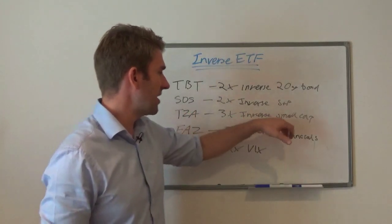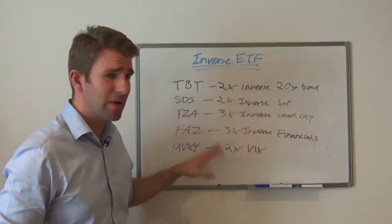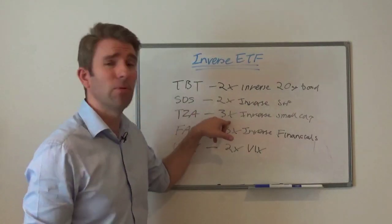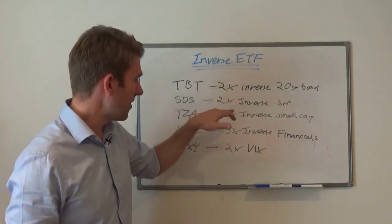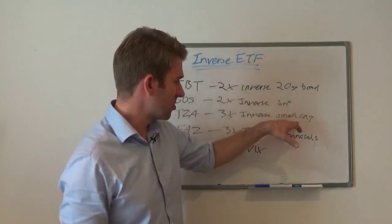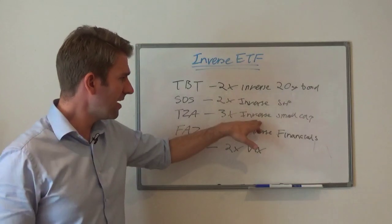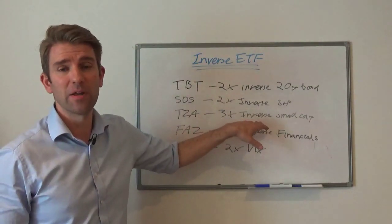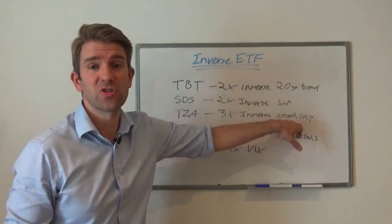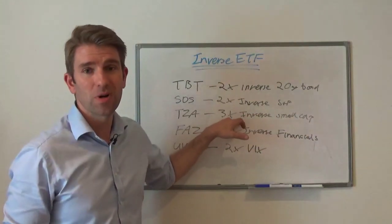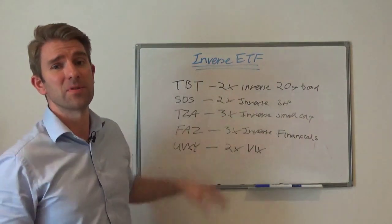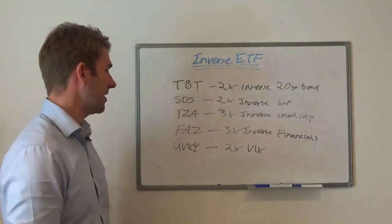TZA is similar — it's an inverse small cap ETF, but this one is triple, not double. So for every 1% the small cap goes up, this one is going to go down by 3%. The idea is if you get a crash in small caps and you're long this, you're going to make a killing. Small caps go down 3%, this thing goes up 9% because it's inverse — so you're making money on that.